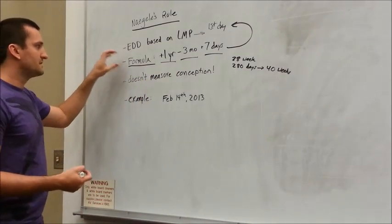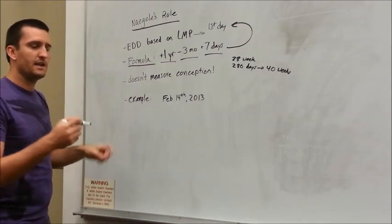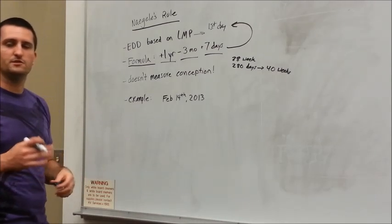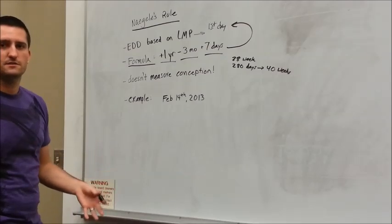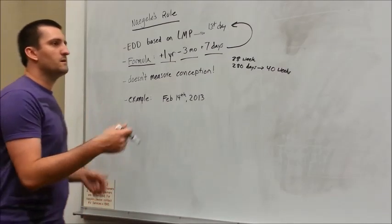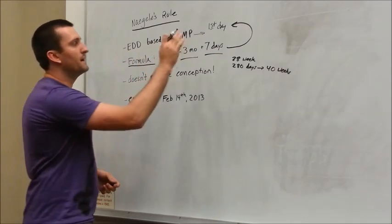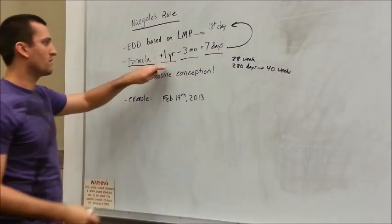So we use this formula. We ask the woman in our history, when was your last period? Oh, it was two weeks ago. What day did you first start menstruating? Oh, I think it was on a Monday. So we use that Monday as the first day and then do the formula.